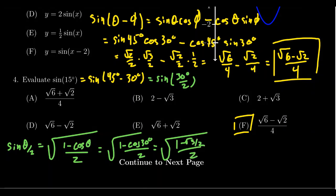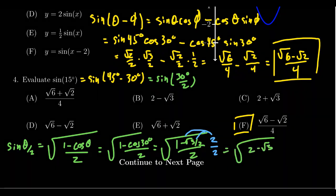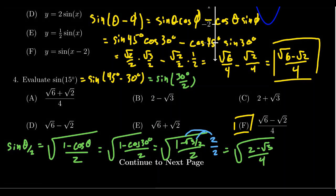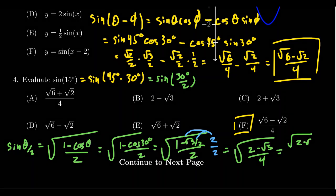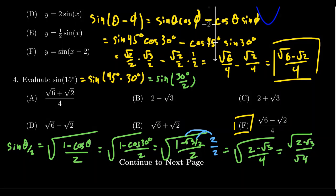We have a fraction within a fraction, so we multiply the top and bottom by 2 to distribute it inside, giving us the square root of (2 minus root 3) all over 4. The denominator is a perfect square, so we can take the square root of (2 minus root 3) over the square root of 4, which simplifies to the square root of (2 minus root 3) all over 2.